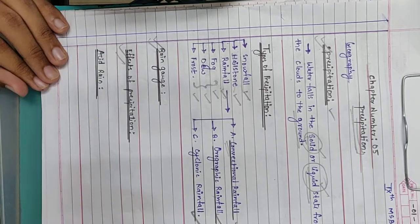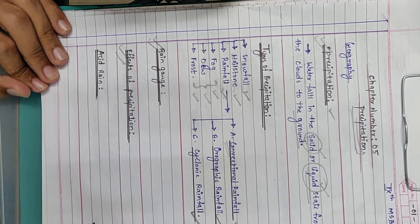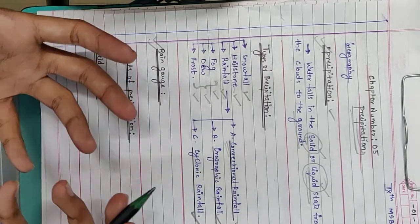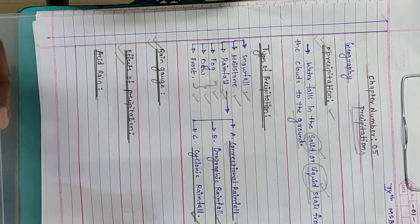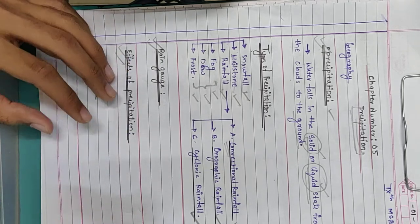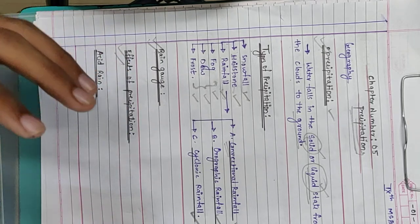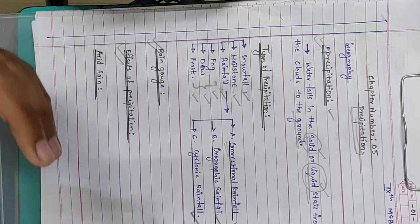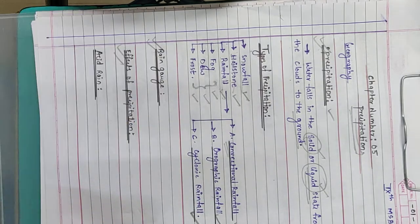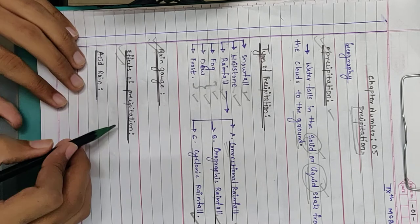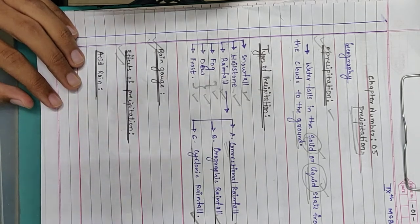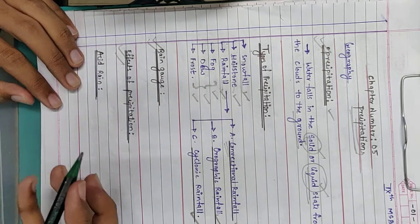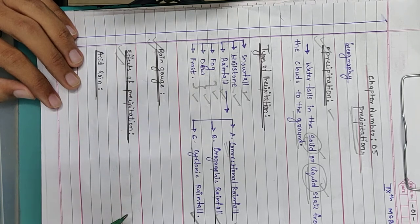We are going to study about the effects of precipitation. There are some advantages of precipitation and some disadvantages of precipitation. Just like every coin has two sides, one positive and one negative, similarly in effects of precipitation there are both advantages and disadvantages. We will study this in the chapter.